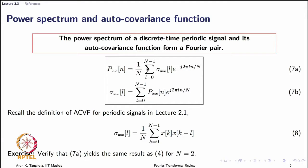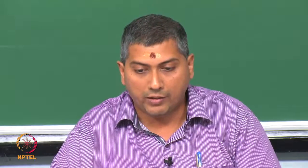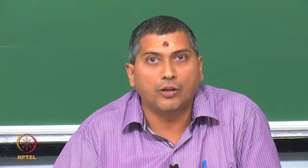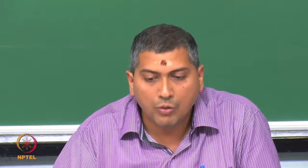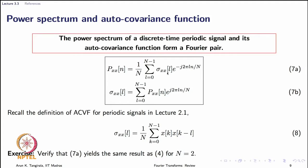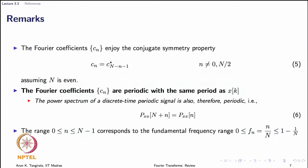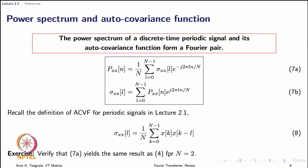This result is fairly easy to prove — I leave it as an exercise. You should recall the definition of the auto covariance function for a discrete time periodic signal from lecture 2.1, plug that expression into equation 7a, and show that it equals what is in equation 4. That is, p_{xx}(n) should equal mod c_n squared. As a quick numerical check, set N = 2 without assuming specific values for x, and you can verify the result.